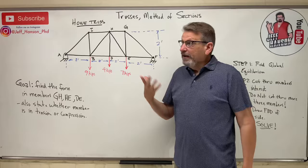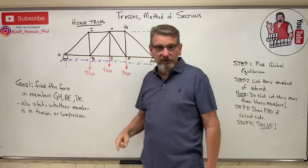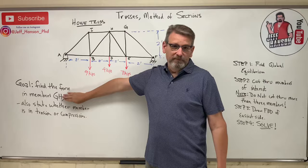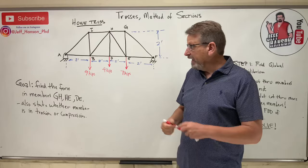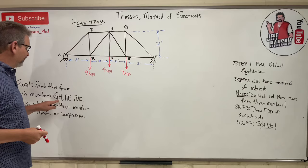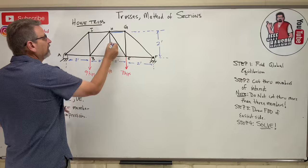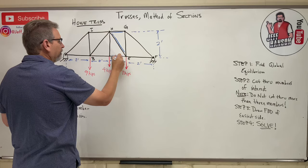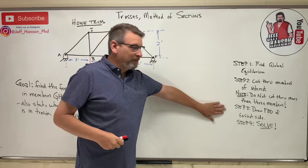So, first question: How do I know to use the method of sections or the method of joints? The answer is simple. If they ask you for very specific members, then you need to be thinking method of sections. If they ask me to find every member in the truss, then I might as well use the method of joints. What I like to do here is highlight the ones that they're asking me about: G-H, H-E, and D-E. So here's G-H up here, I'm just going to make them blue. H-E is this guy, and D-E is this one here. I have written you a recipe over here. If you follow this recipe, you can do method of sections, piece of cake.